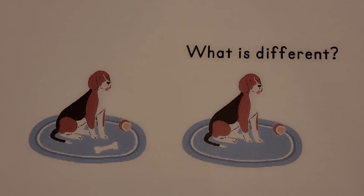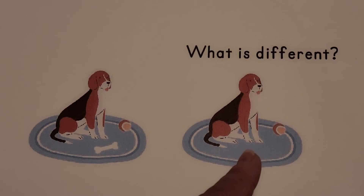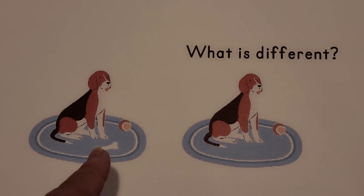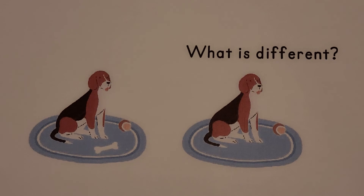I see a dog sitting on a rug. What is different about this picture than this picture? If you said this picture is missing the bone, you're correct — this one has a bone on the rug, this one has no bone. If you said the bone is missing, you're right. That is what is different.